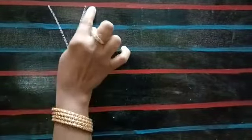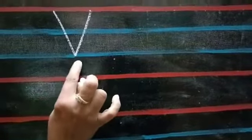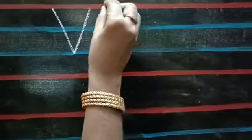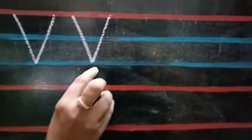Yes, down, up. If you write this stroke, it is called capital letter V. Down, up. This is capital letter V.